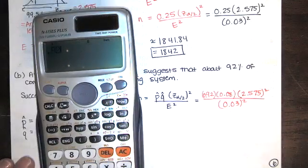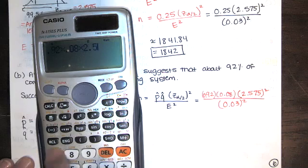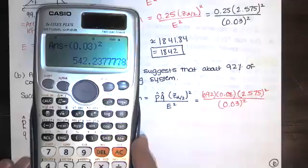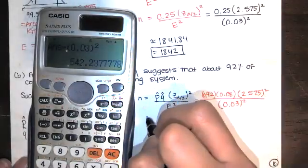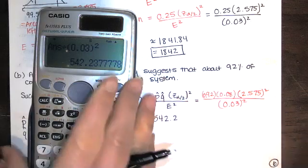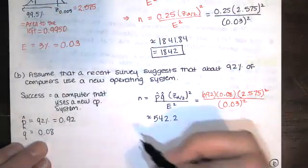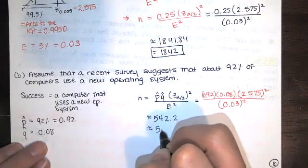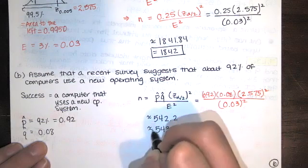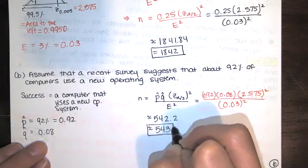So you have 0.92 times 0.08 times 2.575. And we square it. And then we divide by 0.03 squared. And we get about 542 this time. 542.2. But we're going to round up to 542.3. Or sorry, 543. I'm sorry. It's getting late. I'm tired.